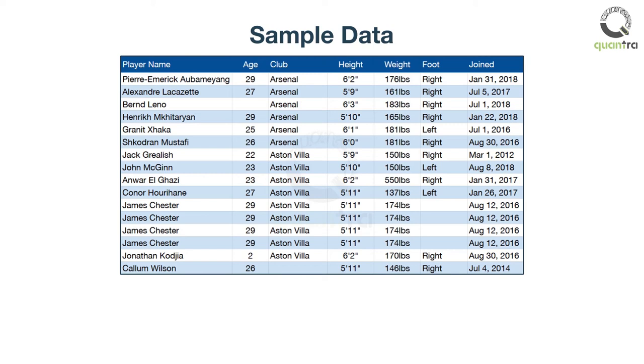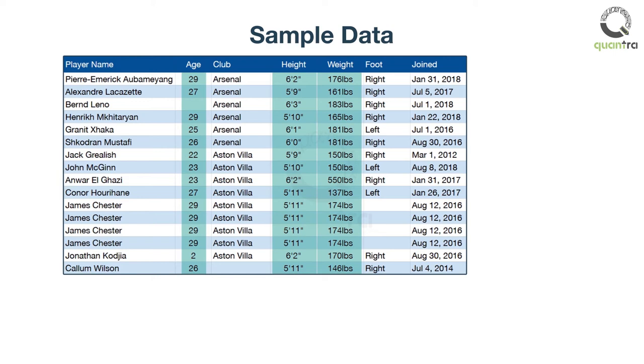As you can see, some attributes such as age, weight, and height have numeric values. These values can be analyzed statistically. This type of data is known as quantitative data.